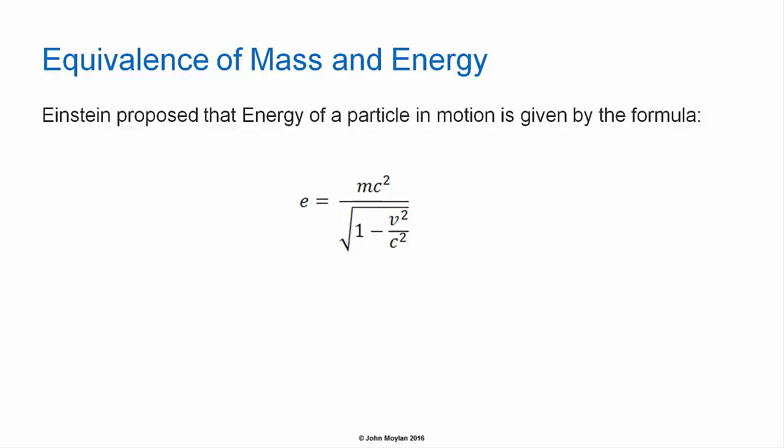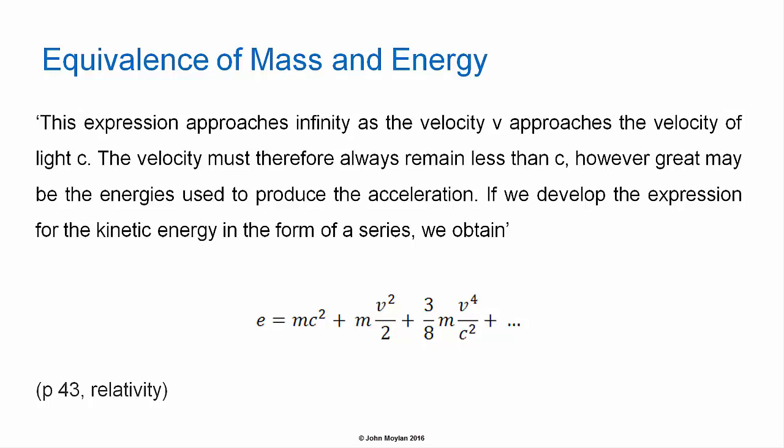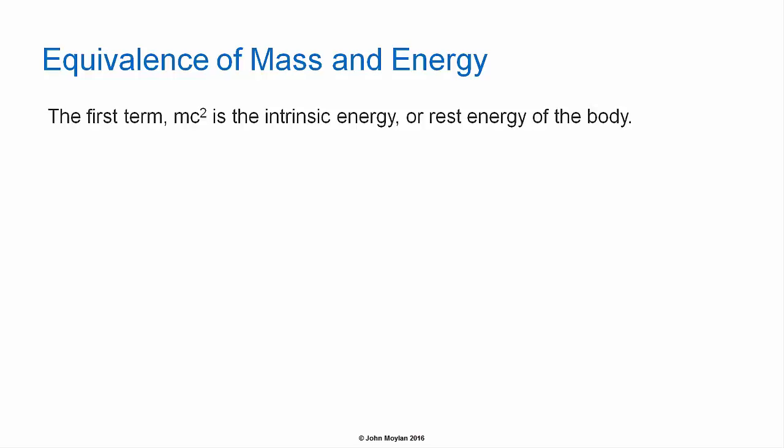Equivalence of mass and energy: Einstein proposed that the energy of a particle in motion is given by the formula E = mc² / √(1 − v²/c²). To quote Einstein: 'This expression approaches infinity as the velocity v approaches the velocity of light c. The velocity must therefore always remain less than c, however great may be the energies used.' If we develop the expression for kinetic energy as a series, we obtain: E = mc² + ½mv² + ...